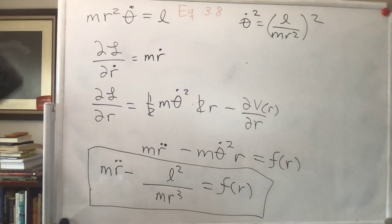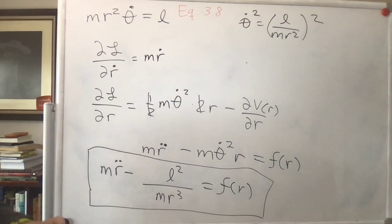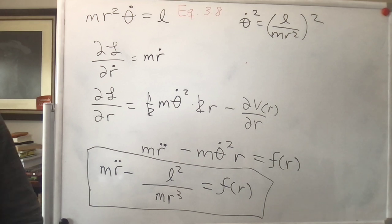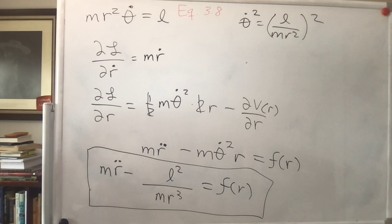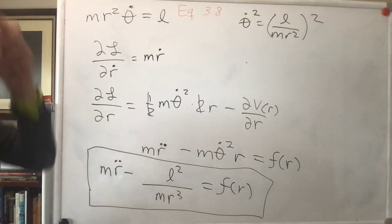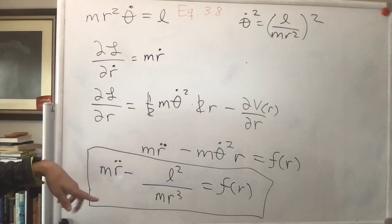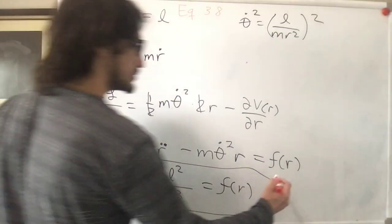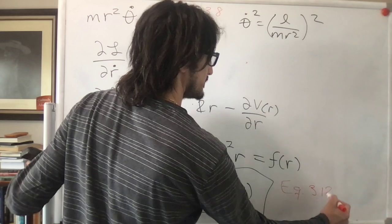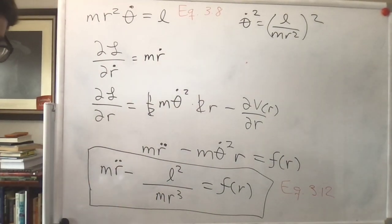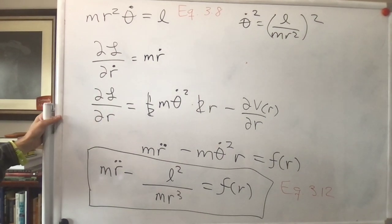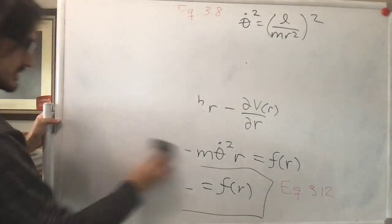For this system in general we have θ and R — how many differential equations should we expect and what order? Two, and they should be second order. We have some constants of integration already because the angular momentum was conserved. And we have another one. This equation is equation 3.12 in Goldstein.